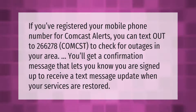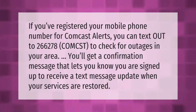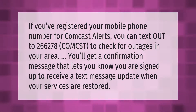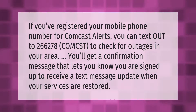If you've registered your mobile phone number for Comcast alerts, you can text OUT to 266278 to check for outages in your area. You'll get a confirmation message that lets you know you are signed up to receive a text message update when your services are restored.